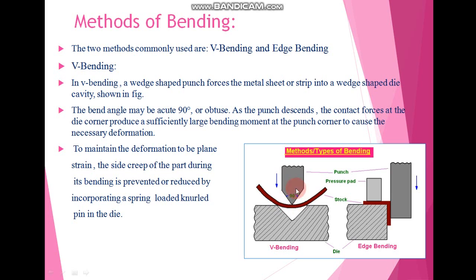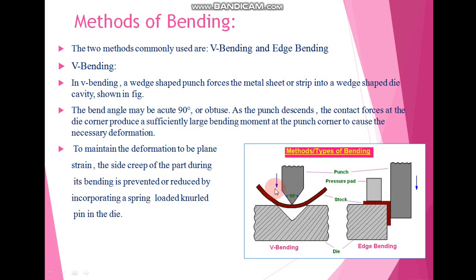First we are going to discuss V-bending. In V-bending, a wedge-shape punch forces the metal sheet or strip into the wedge-shape die cavity, as shown in the figure. The shape of the punch is wedge-shape or V-shape. This punch applies the force over the metal, which is placed over the wedge-shape die cavity, and when we apply the force with the help of this punch, we get the required bending operation in the material.